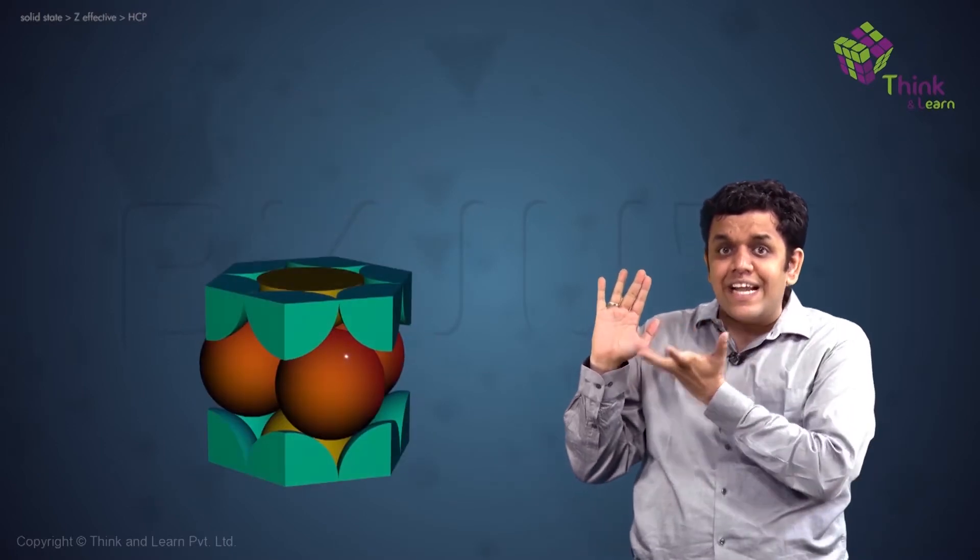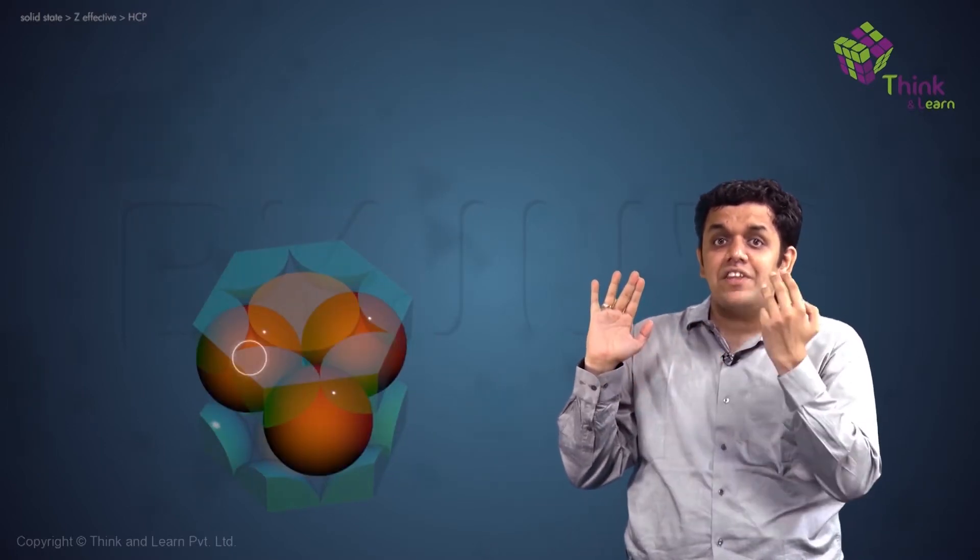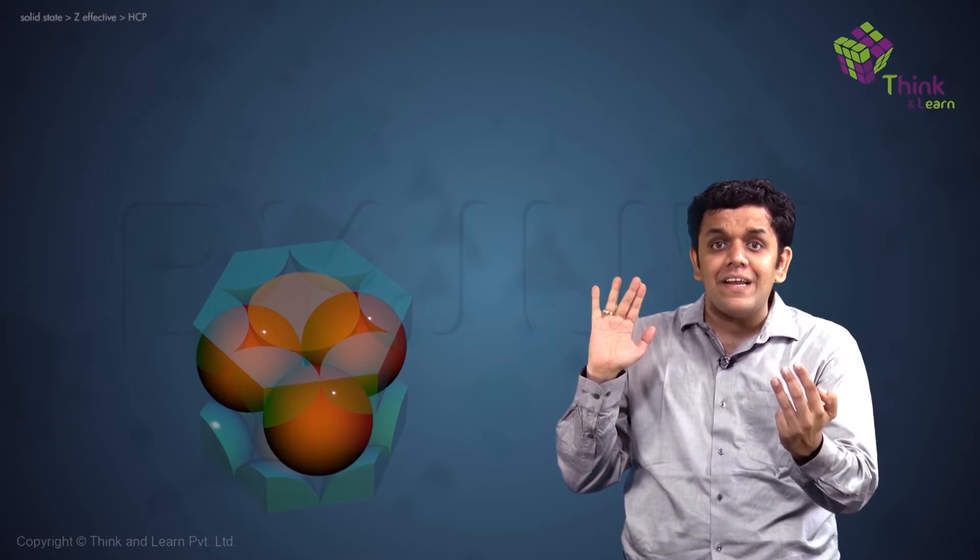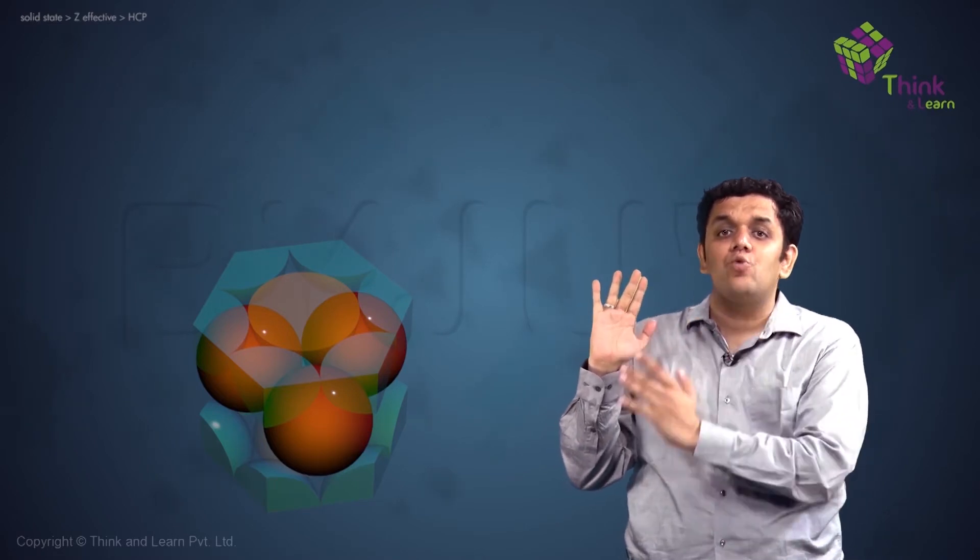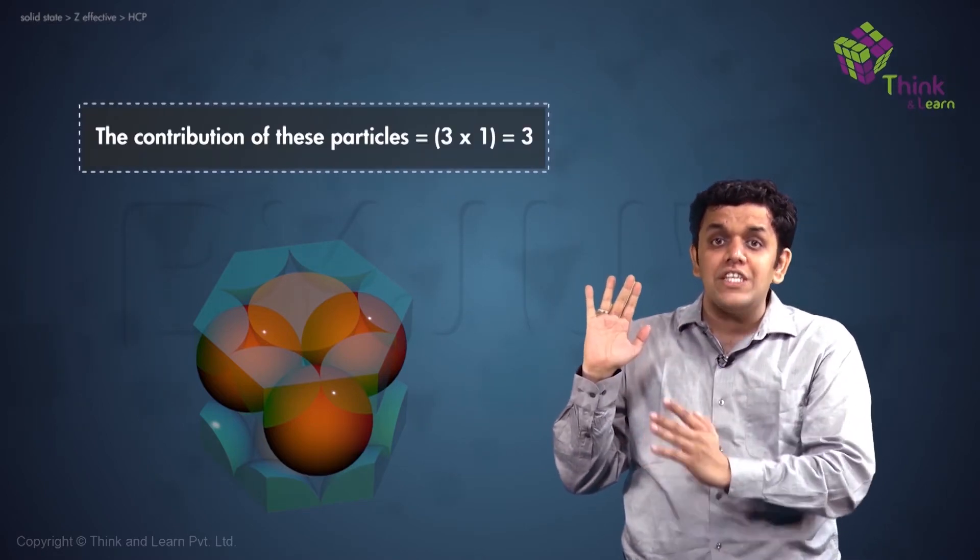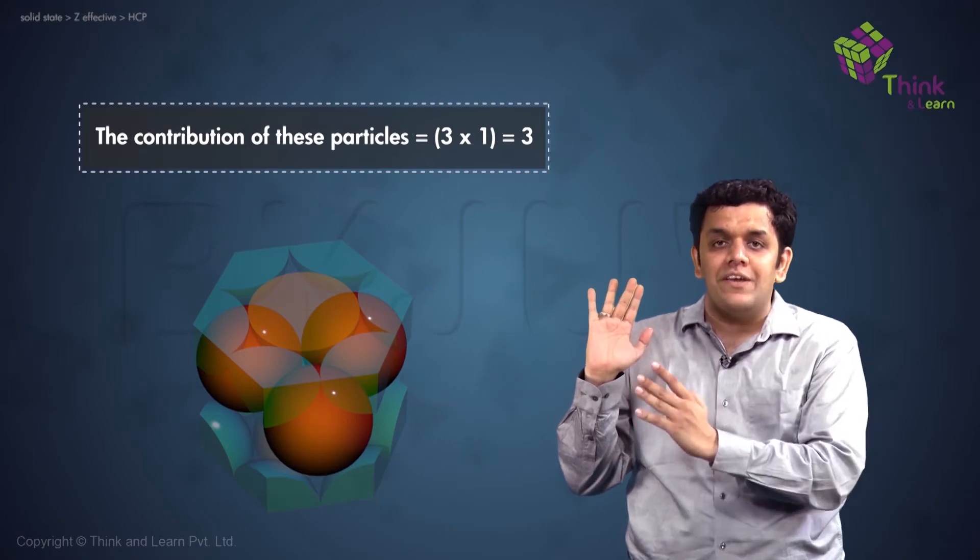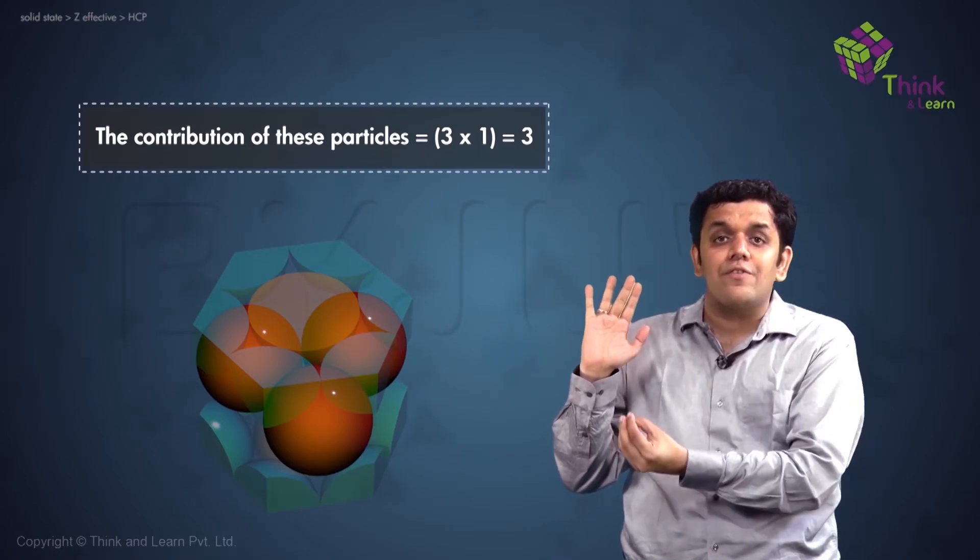Now let us look at the center of the hexagon. There are three particles. Now these three particles are completely towards unit cell U1. Their contribution is complete towards unit cell U1 only because they are located at the center of the unit cell.